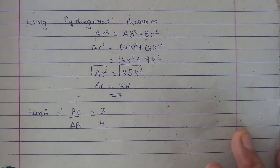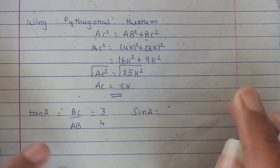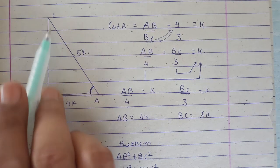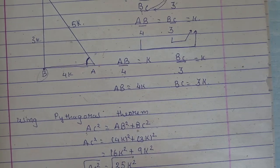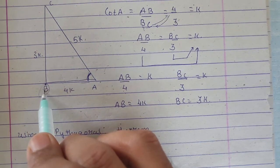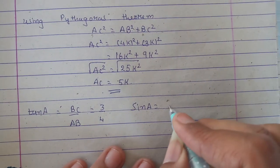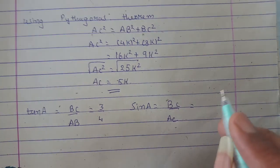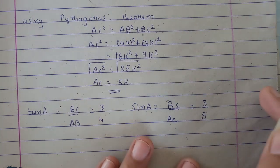Now we need sinA. So sine formula is opposite upon hypotenuse. For A, the opposite is BC and hypotenuse is AC. So that is BC upon AC. Now BC's value we have is 3K and AC is 5K. So that is 3 by 5.